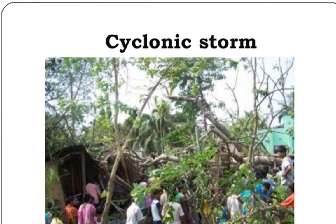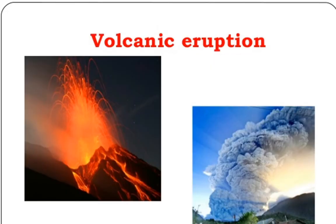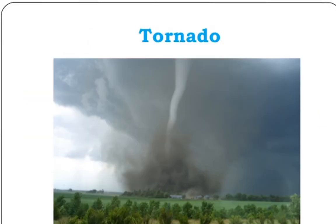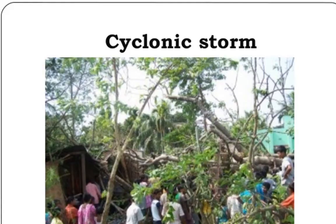Next is a cyclonic storm, caused by high winds and heavy rain, which normally happens in the rainy season. Then there is volcanic eruption — inside the earth there is lava and heat, and when lava comes out from the ground it causes air pollution from the smoke, and the lava reaching land causes infertility of the soil. There is also the tornado. All these natural disasters are very dangerous.